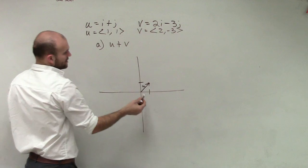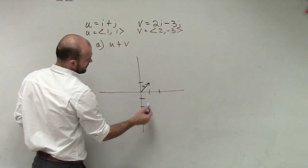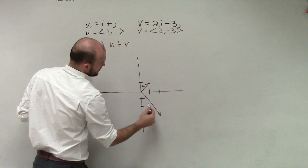And let's do a little color coordination. And let's do v, which is v over 2, down 3. 1, 2, 3. Okay?